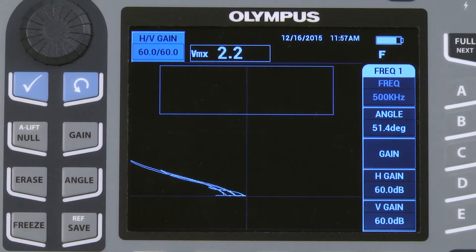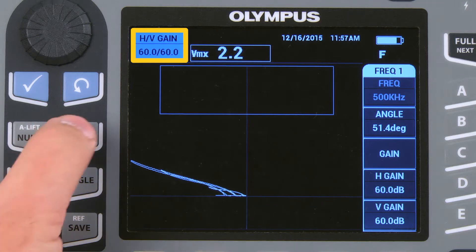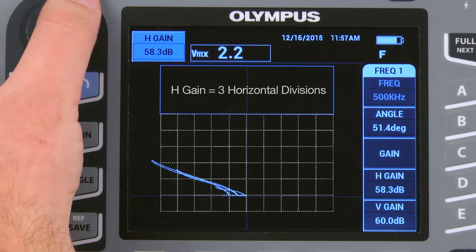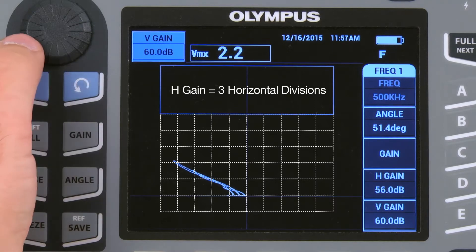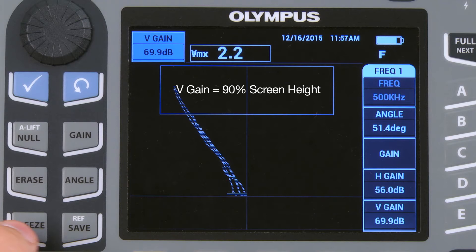Pressing the gain key once will enable the user to modify both the horizontal and vertical gains together. Press the gain key once more to modify the H gain. Reduce the gain so that the highest signal covers about three horizontal divisions. Press the gain key again to modify the V gain.